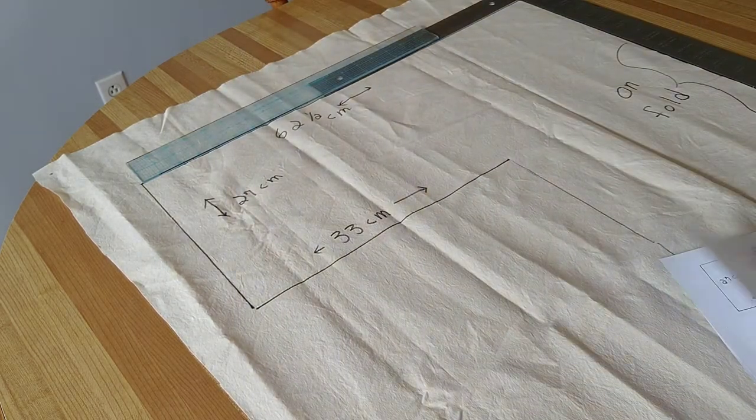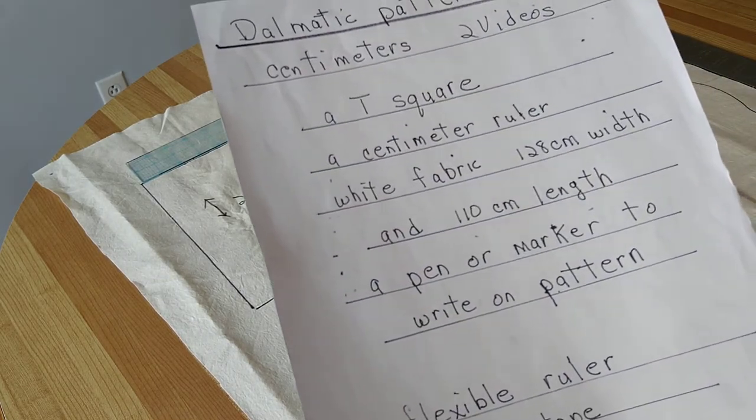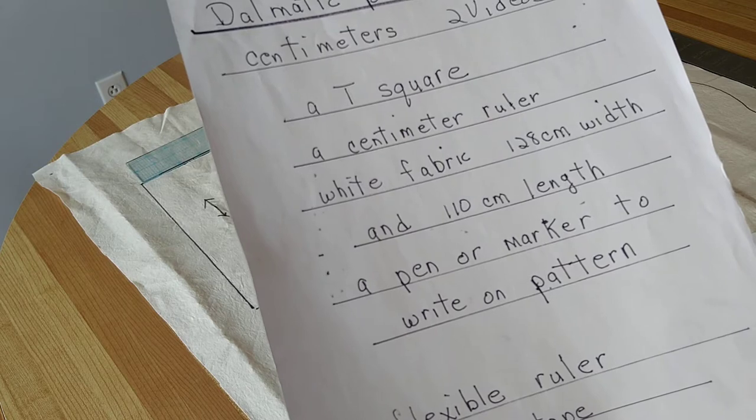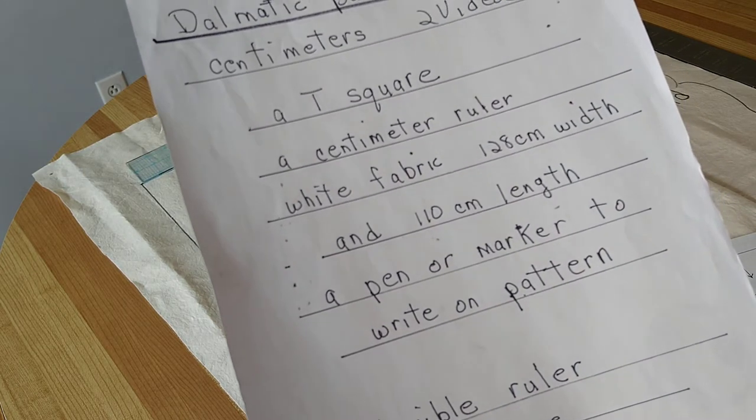For the dalmatic pattern you will need a t-square, a centimeter ruler, white fabric or a cream color like I'm using today, something light.